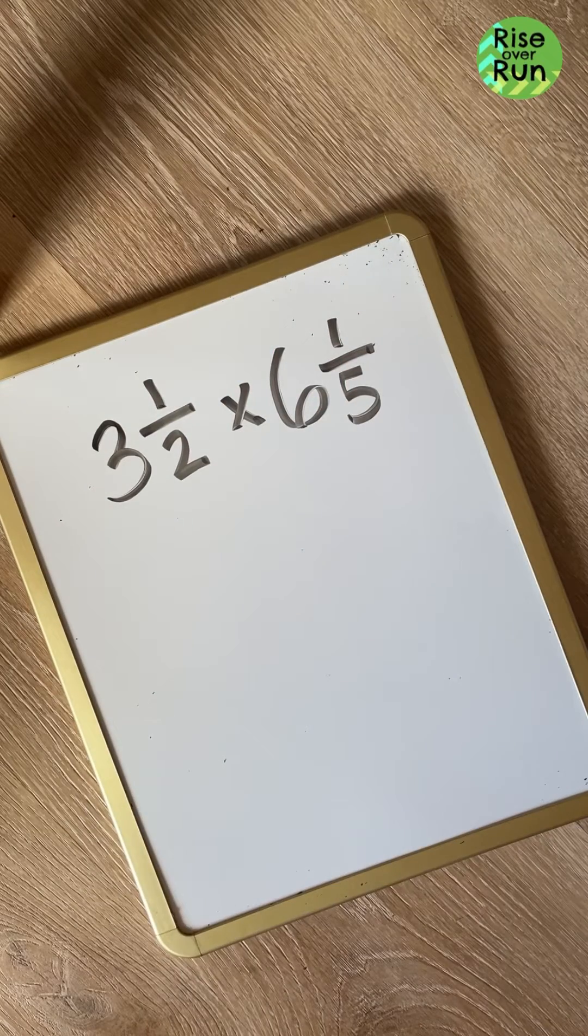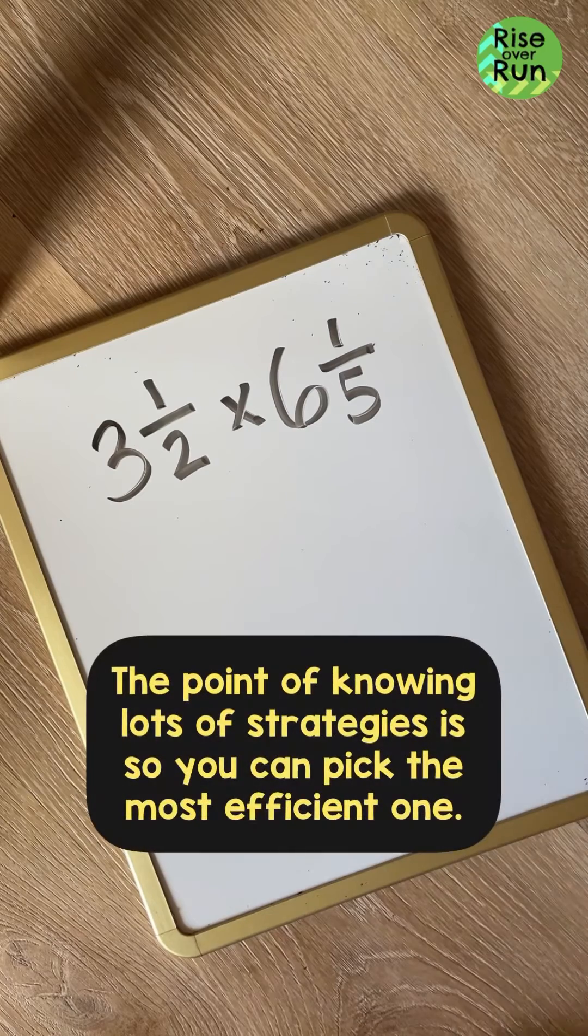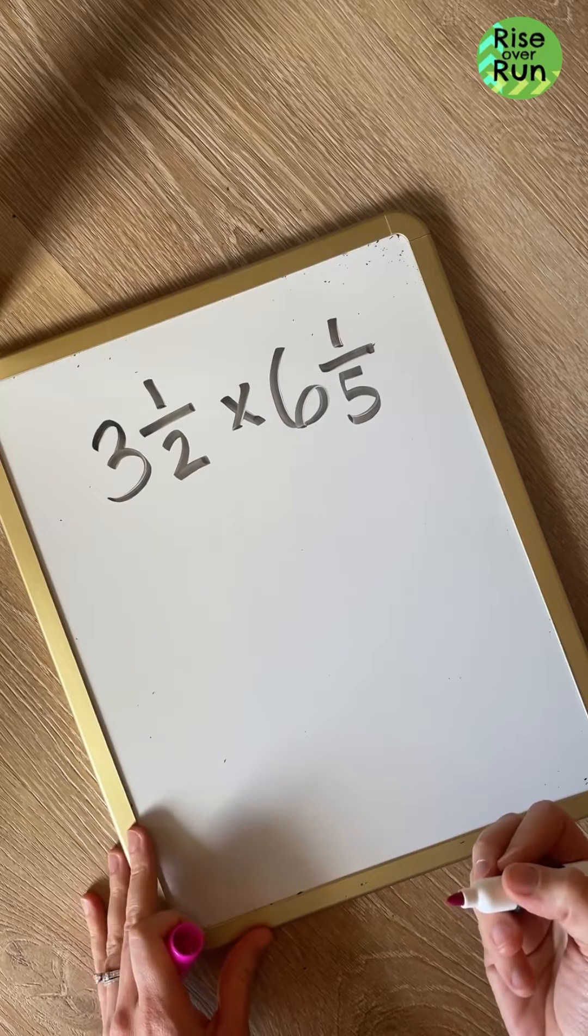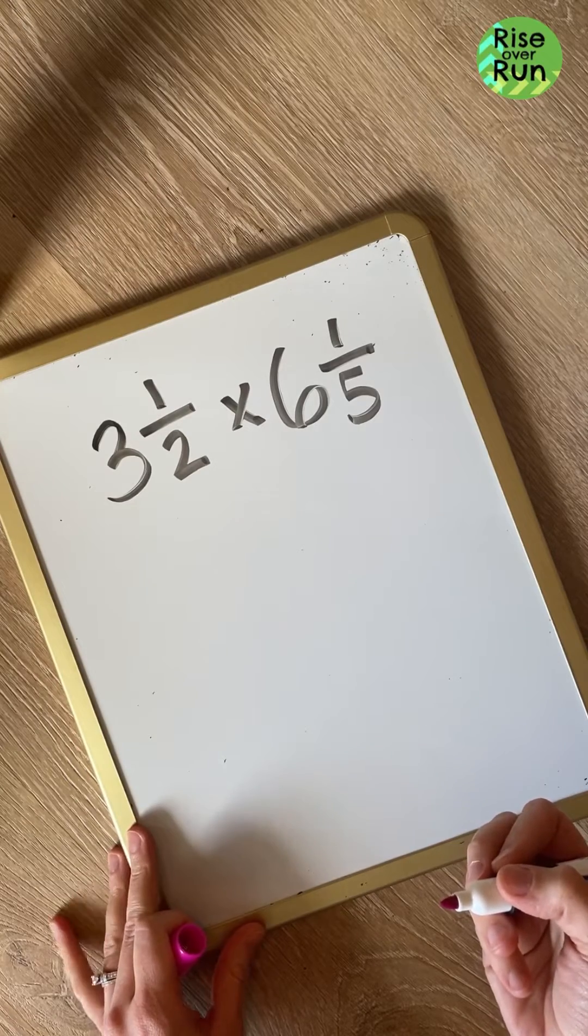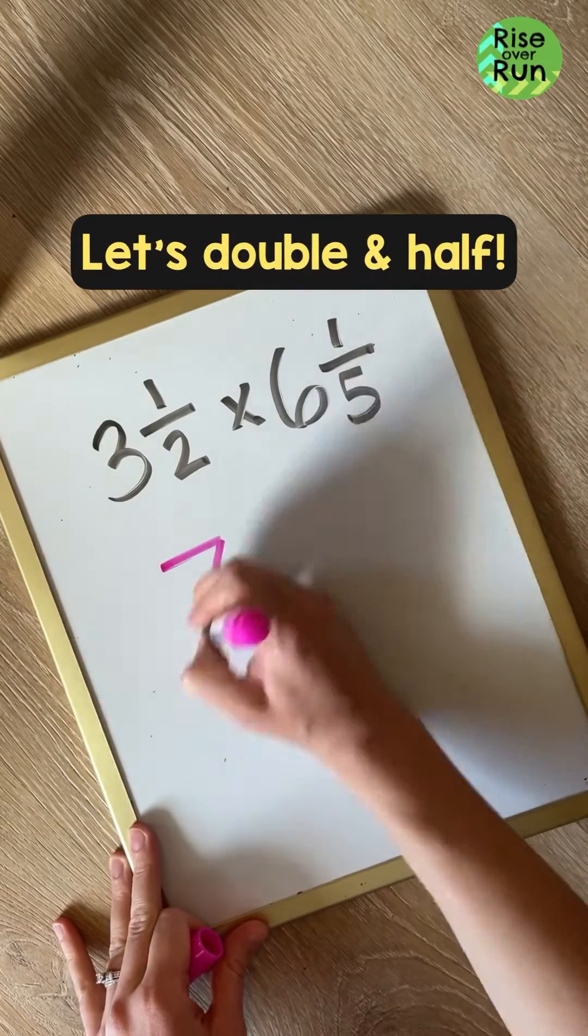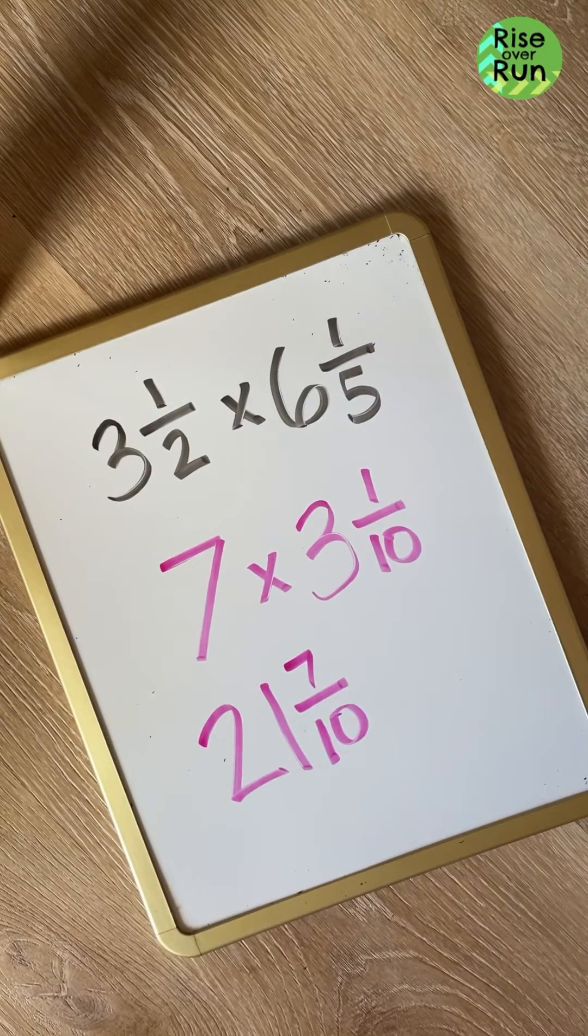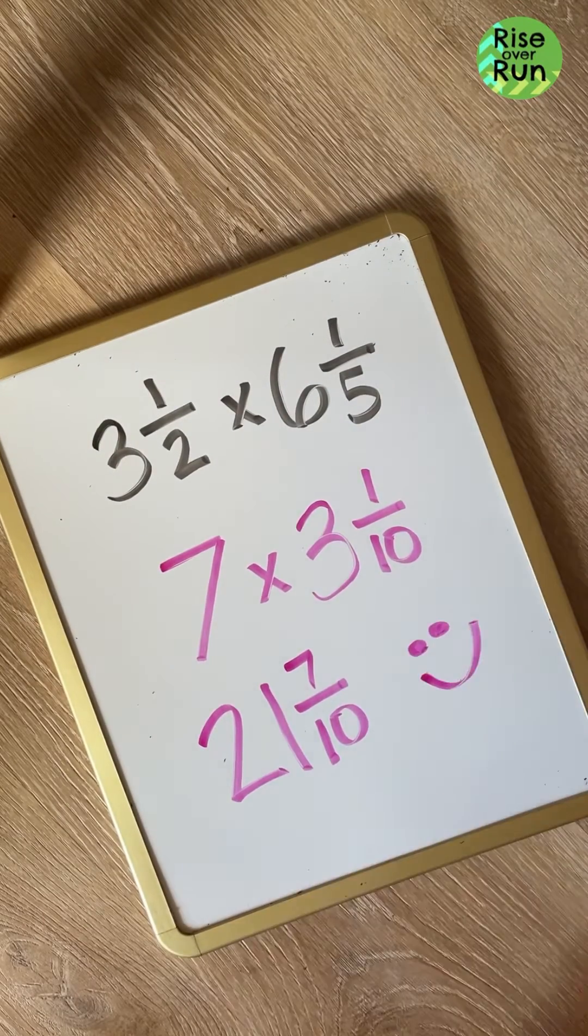The point of knowing lots of strategies is so that you can pick the one that is the most efficient for the problem you're working on. With this one, I'm going to go with double and half. 3 1/2, I'll make it a 7, and 6 1/5, I'll make it a 3 1/10. I can multiply these and get 21 and 7 tenths.